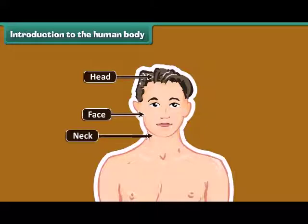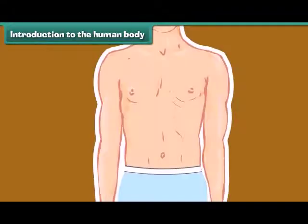Below the face is the neck, which joins the head to the rest of the body. It helps the head move towards right and left, and up and down. It is cylindrical in shape.